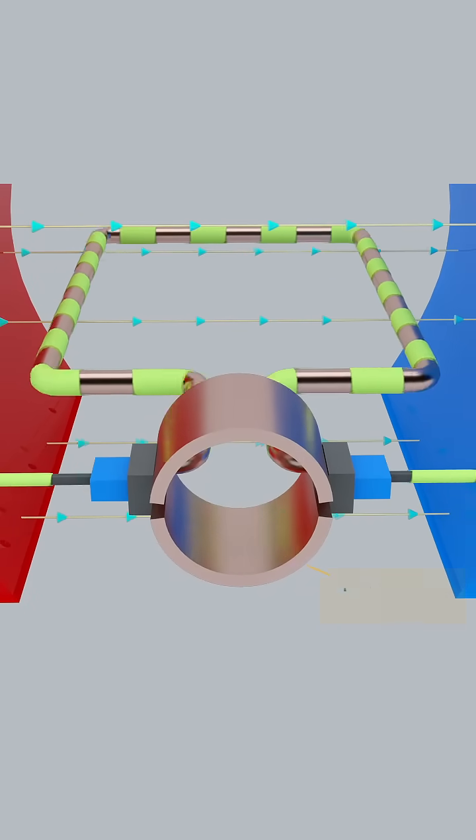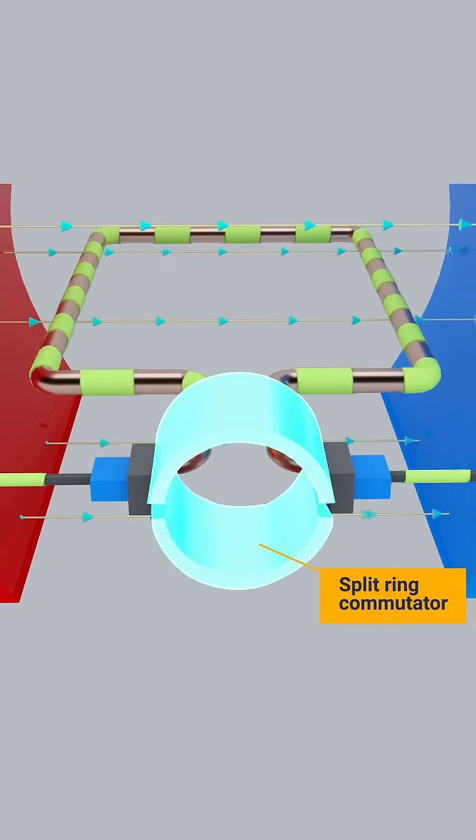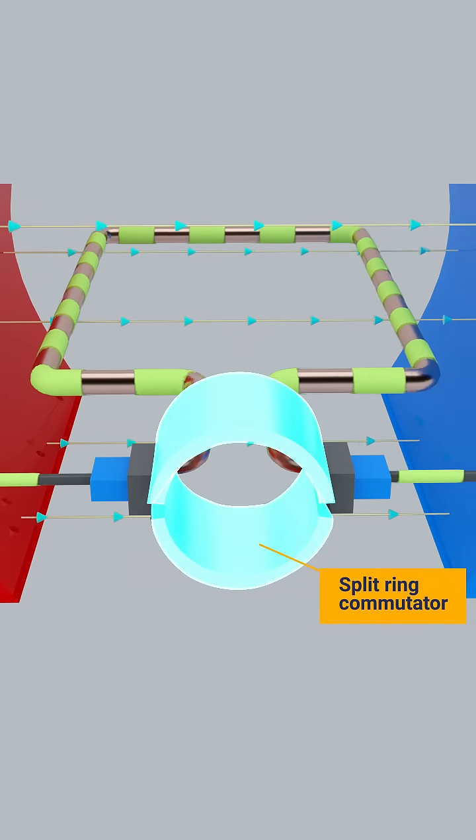The brushes are in contact with a split-ring commutator, which consists of two segments, known as the commutator segments.